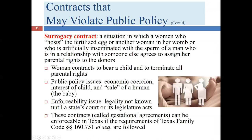So they hired a woman to be the surrogate. This was back in the 80s where the technology wasn't as advanced — there was no option of using an egg from the wife and implanting it inside the surrogate. Instead, through artificial insemination, the surrogate's own egg was impregnated by the husband. So the surrogate mother was carrying a child that was biologically hers and biologically the husband's.